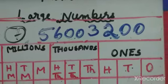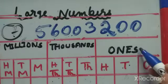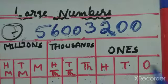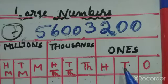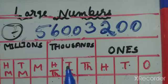Now here we have the international place value chart. It has ones, thousands, millions, and billions. In the ones place we have: ones, tens, hundreds. In the thousands place: thousands, ten thousands, hundred thousands.